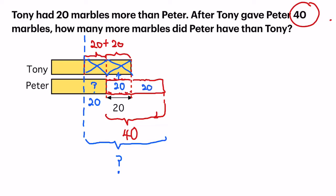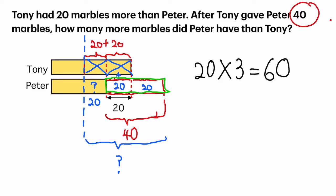And it's another 20 that's moved down, because at the beginning of the story we mentioned that there are 40 given from Tony. So to find the answer, there are three units of 20. So 20 times 3, or you can take 20 plus 20 plus 20 — my answer will be 60.